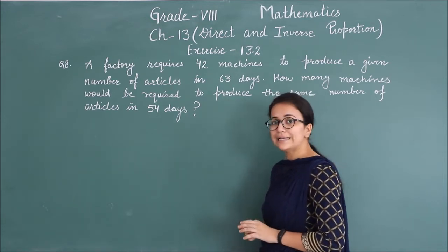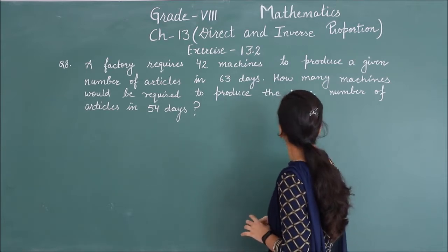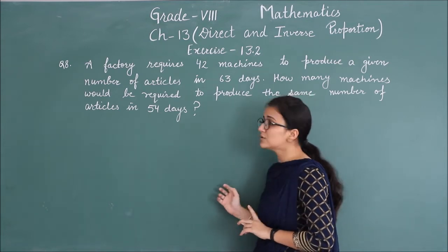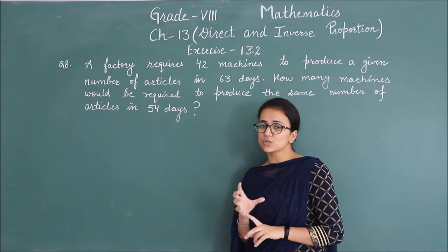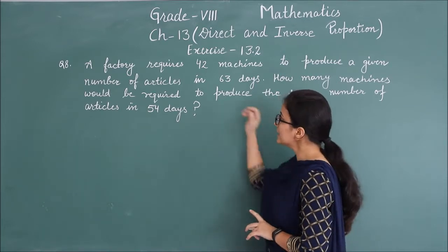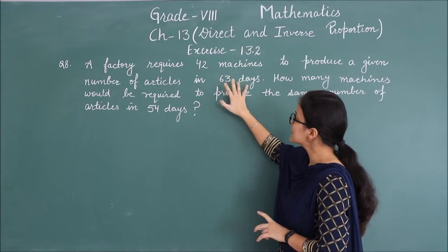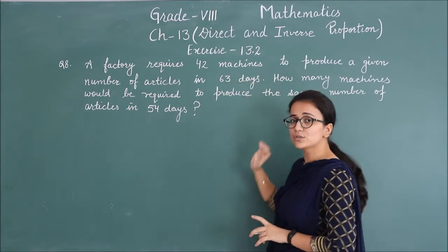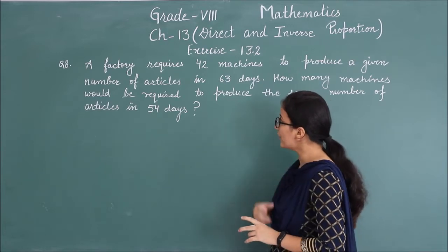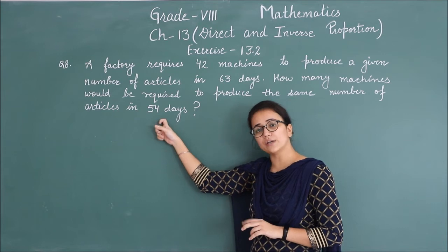Question number 8 is: a factory requires 42 machines to produce a given number of articles in 63 days. How many machines would be required to produce the same number of articles in 54 days?